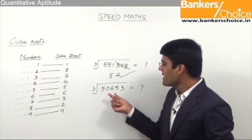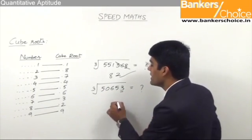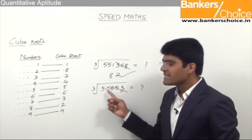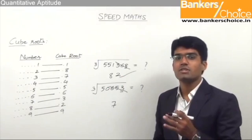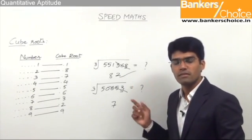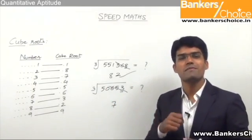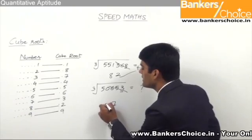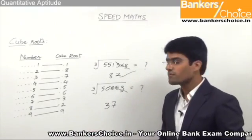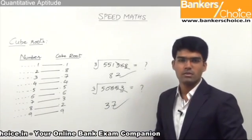Let's take one more example: 50653. The number is ending in 3, and when a number ends with 3, its cube root should end with 7 — that is the first step. Now leave the last three digits. What is less than 50 and a perfect cube? That is 27, which is 3 cubed. If you go for 4 cubed, it is 64, which is more than 50. So immediately less than 50 and a perfect cube is 27, meaning the tens place is 3. So 37 is the answer for the cube root of 50653.